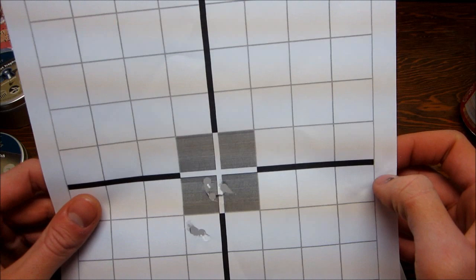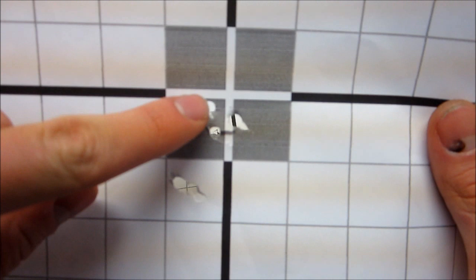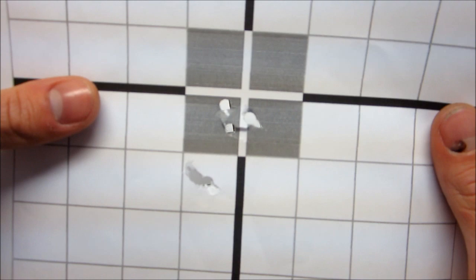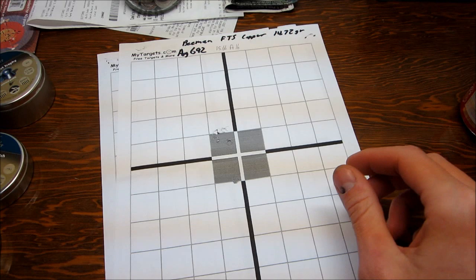These are the Beeman Crow-Mags, they're 18.21 grains, average 608 feet per second, and 14.95 foot-pounds of energy. These shot pretty good, too. We have three all right in the center there, and then two here. I really wasn't trying to shoot for the center on the groups. I mean, they're all going to group different. I just want to see how close the pellets are to each other. But that one looks like it has some potential.